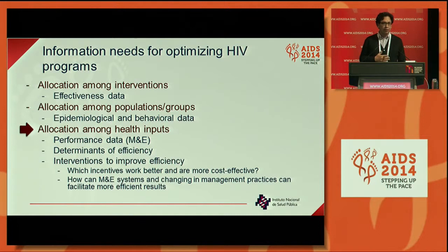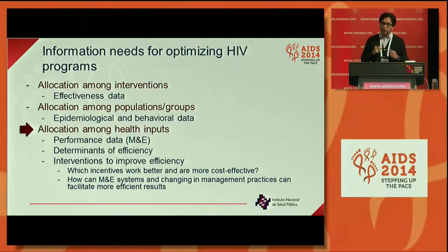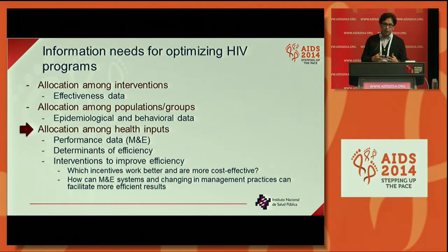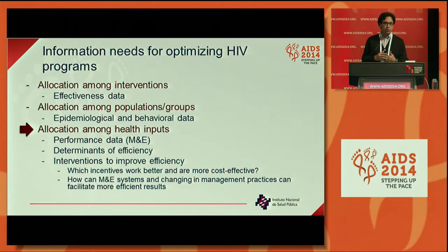We have previously suggested that when thinking about optimizing prevention programs it's useful to think about three dimensions. First, optimizing the allocation of resources across interventions — for which effectiveness data is needed. Second, targeting the populations or groups where more infections can be averted — for which epidemiological and behavioral data is needed. But there is also a third level: allocation among health inputs. Once we decide which interventions to implement and for which populations, we need to do that in the most efficient way.